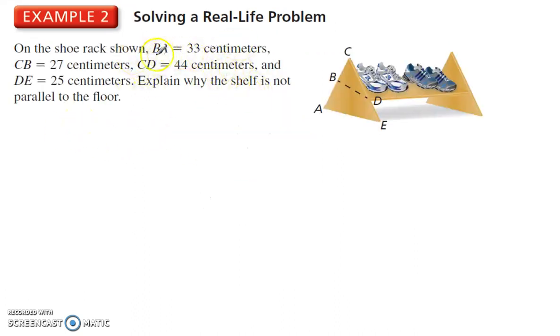The shoe rack shown here, BA is 33 cm, CB is 27, CD is 44, and DE is 25. Explain why the shelf is not parallel to the floor.